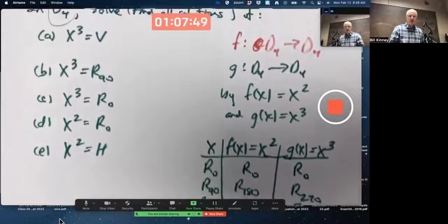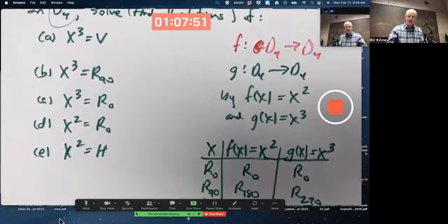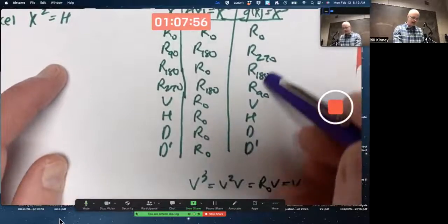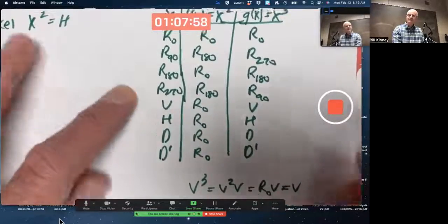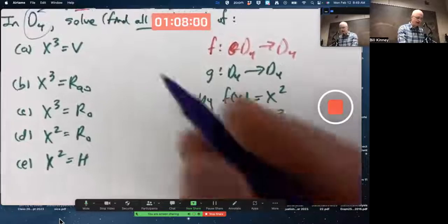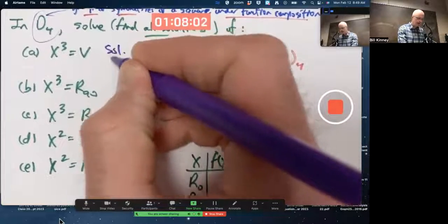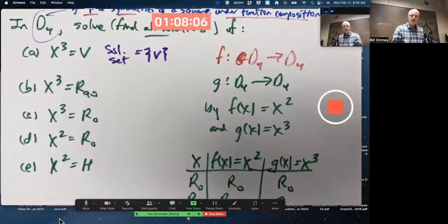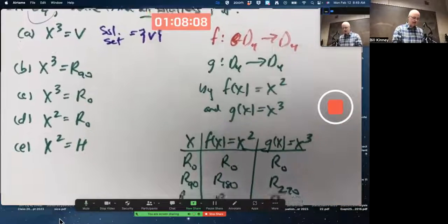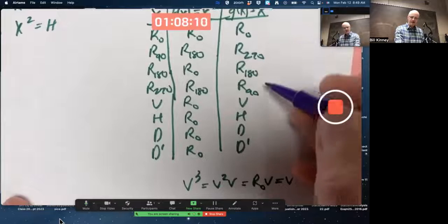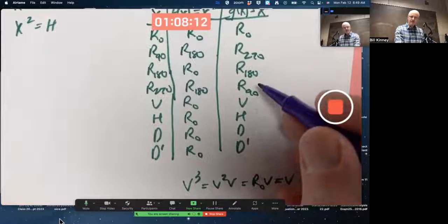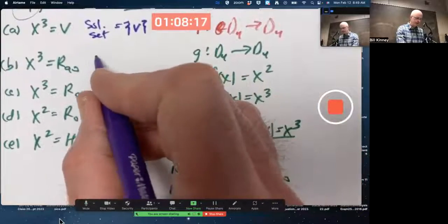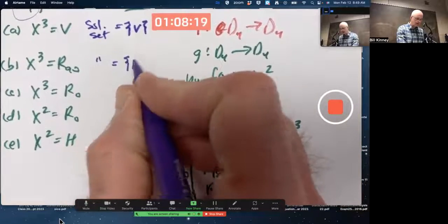This can help you solve the problem now. What are all the X's whose cube is V? Look for the V in this column. It's just V itself. The solution set here is just V itself. What are all the elements whose cube is R90? R90 appears right there in the cube column. R270 is the only solution. Solution set is R270.